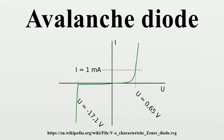Avalanche diodes are normally specified for this role by their clamping voltage VBR and the maximum amount of transient energy they can absorb. Avalanche breakdown is not destructive as long as the diode is prevented from overheating.